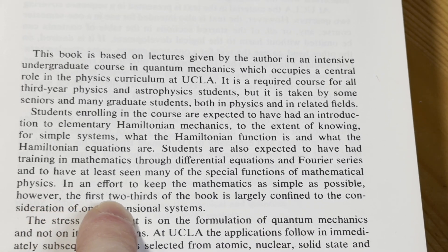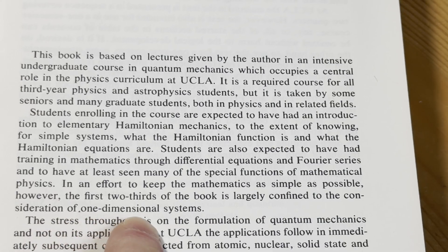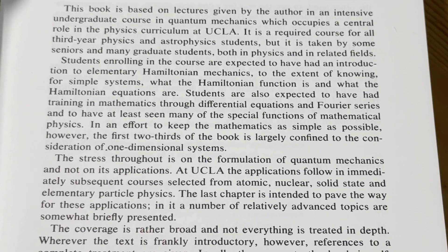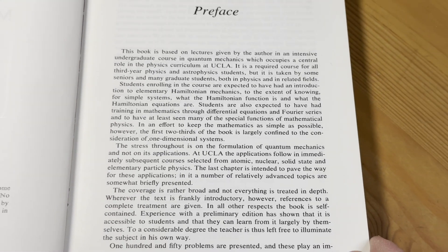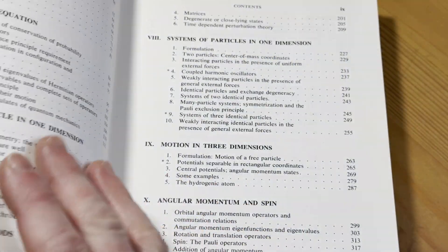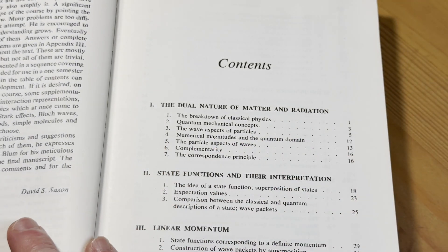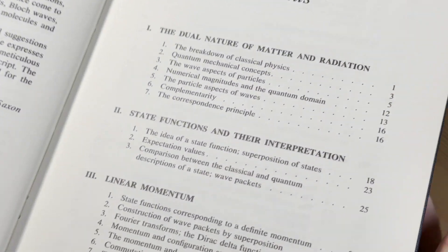So it's a pretty high bar. In an effort to keep the mathematics as simple as possible—and so the authors are like, okay, you need to know all this stuff, but we're trying our best to keep it simple. However, the first two thirds of the book is largely confined to the consideration of one dimensional systems. And so this is something, again, that a person could use to learn on their own. And there's November '67, David Saxon. Sorry, I just have to give it a whiff here.